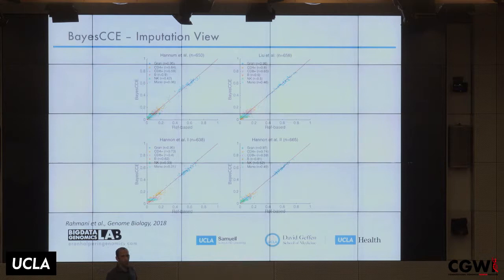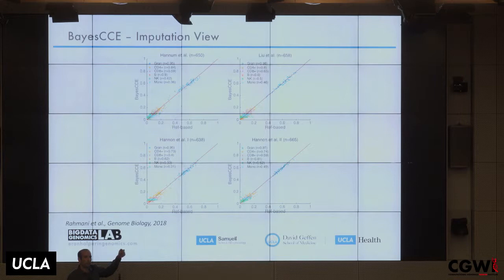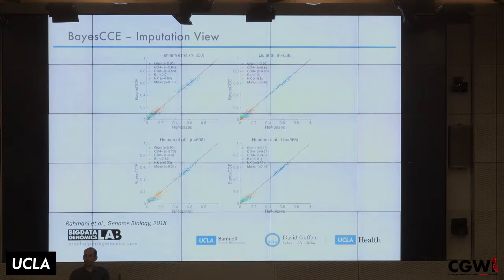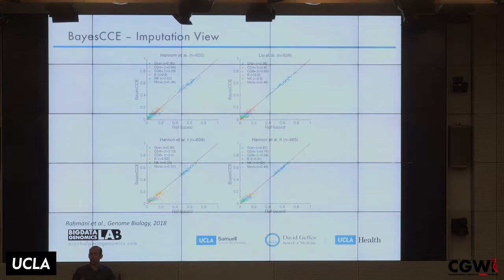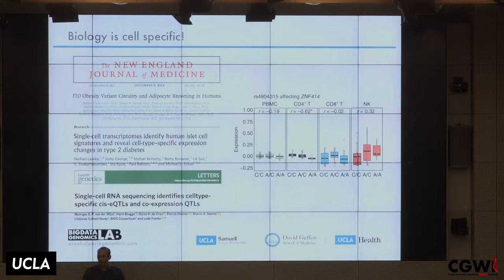We also have a Bayesian framework for this problem. On top of ReFACTor, we add Bayesian assumptions using knowledge about the data — for instance, the distribution of cell counts in the population. We obtained this from medical records at UCLA to learn the distribution of cell counts in patients. Even using just 10 individuals with known cell counts out of your entire sample gives really good correlation between estimated and actual cell counts.